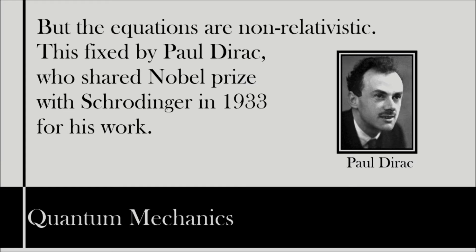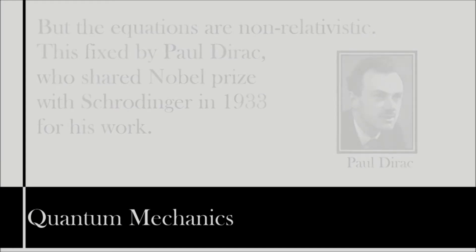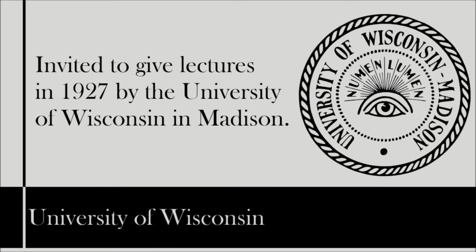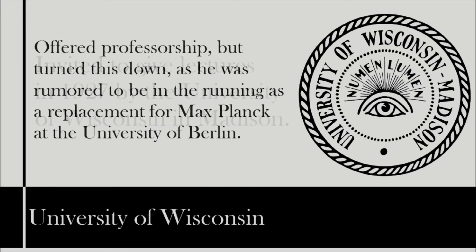As soon as Schrödinger published his papers, he received offers from many institutions around the world to hold guest lectures, and in early 1927 he travelled to the United States to give a series of lectures at the University of Wisconsin in Madison. So impressed was the university that they offered him a permanent professorship, but Schrödinger turned this offer down, as he had received word that he was in strong contention as a replacement for the retiring Max Planck, as chair of theoretical physics at the Humboldt University of Berlin.